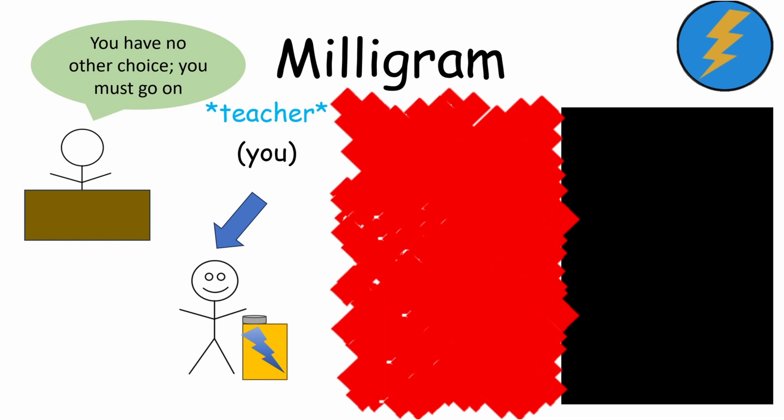Reluctantly, you press the 450 volt button again. The machine repeats, danger, severe shock. You expect another scream. But from the learner's room, there's silence. The experiment is over.